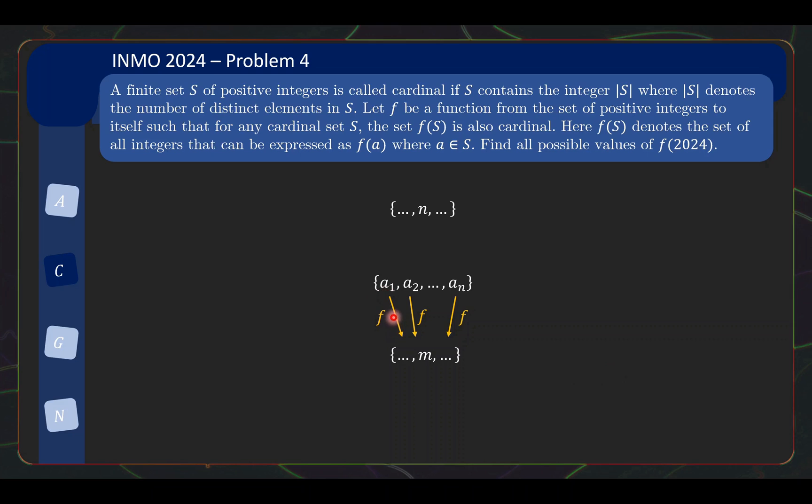So you have F of each of these, you get N numbers, but you collapse the repeated numbers so that you get a set. So the set will actually be of size less than or equal to N. But what this property F has is that whenever this is cardinal, the resulting set you get is also cardinal. Meaning if this has M elements, then the number M is also inside the set. Okay, so among all possible valid F, we need to find all possible values of f(2024).